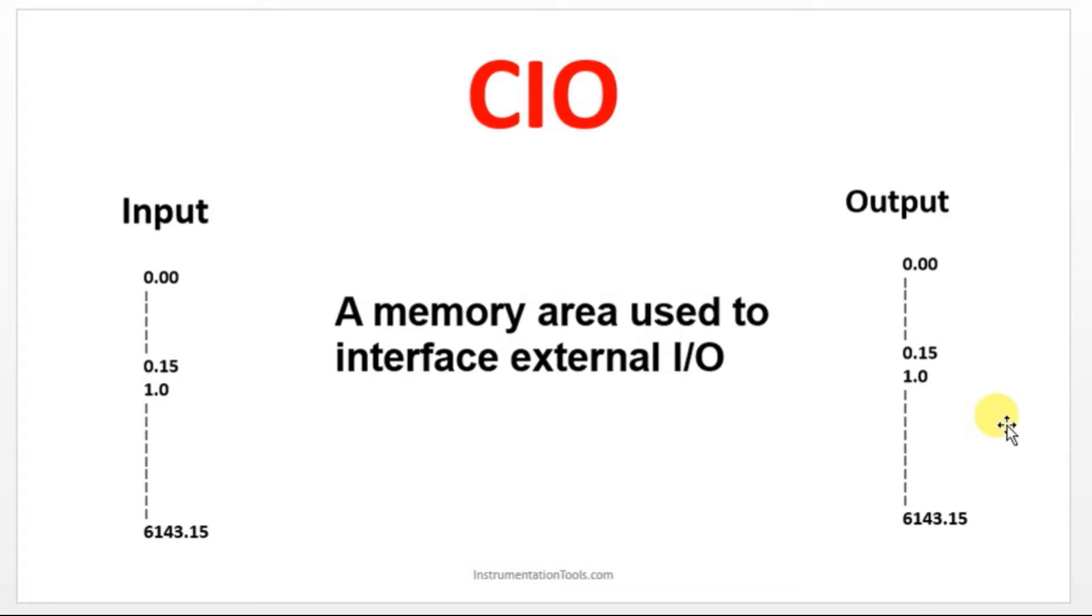If it is an expansion module input, you can make use of 2.0 to 9.0. It is like 2.0, 2.1, 2.2, like that you can name it for the expansion module I/Os. And if you want to use some memory coil, you can make use of 10.0. Memory coil in Omron is addressing as 10.0, 10.1, like that. Expansion module output address will be starting from 102.0, 102.1, 103, 104, like that it will go for expansion output module. For input 0.00, for output 100.0, and for memories it will start from 10.0.